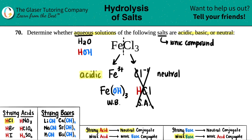All you have to do now is add them up: what happens when you mix an acidic solution with a neutral one? It's still acidic. So FeCl₃ is an acidic solution — or an acidic salt — but acidic nonetheless.